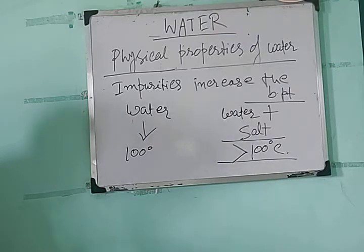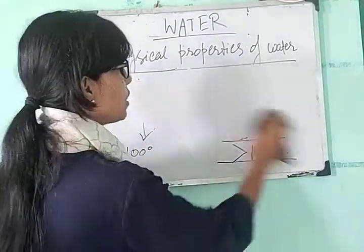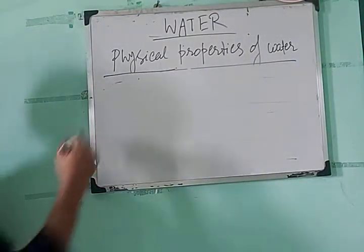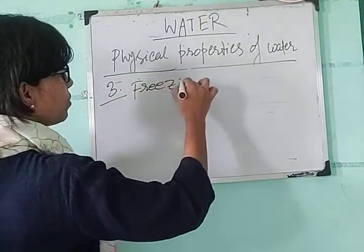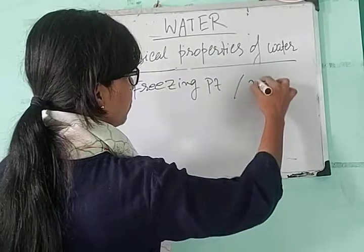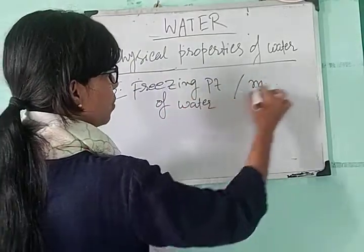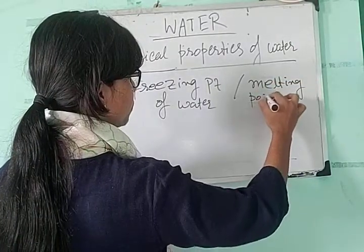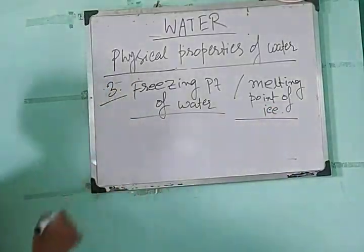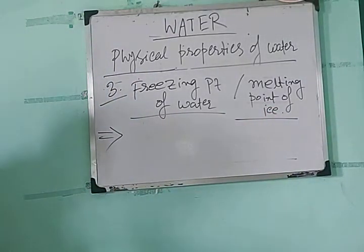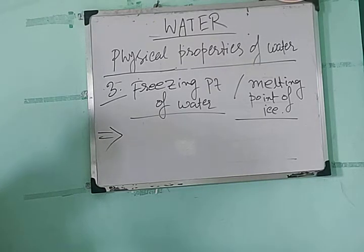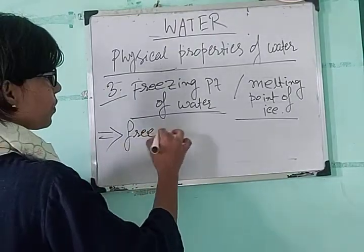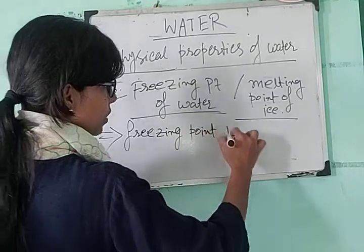The next point is the freezing point of water, or the melting point of ice. Pure water freezes at 0 degree Celsius, at standard atmospheric pressure of 760 mm of Hg. The freezing point of water decreases with increasing pressure — these two quantities are inversely proportional.